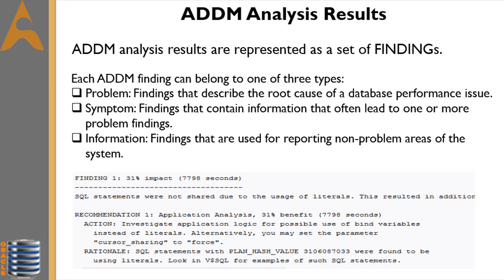For example, if a system performs many read I/Os, the ADDM might report a SQL statement responsible for 50 percent of DB time due to I/O activity as one finding, and an undersized buffer cache responsible for 75 percent of DB time as another finding. When multiple recommendations are associated with a problem finding, the recommendations may contain alternatives, and the sum of recommendation benefits may be higher than the finding's impact.